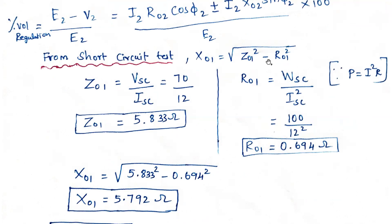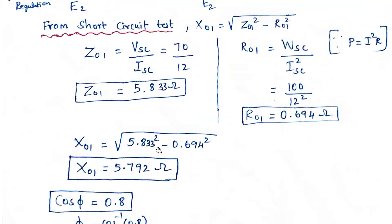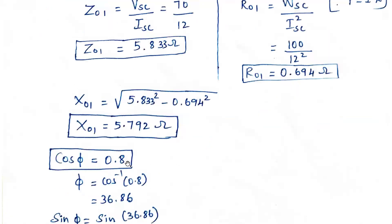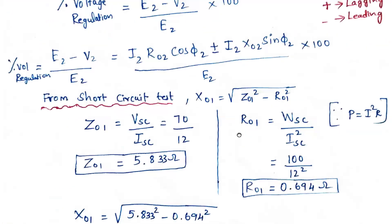Now X₀₁ equals the square root of Z₀₁² minus R₀₁². Z₀₁ is 5.833 and R₀₁ is 0.694, so after simplification X₀₁ equals 5.792 ohms.